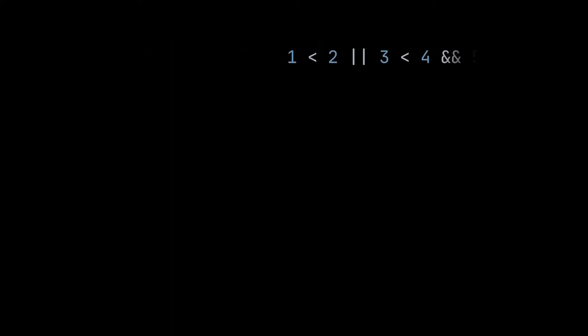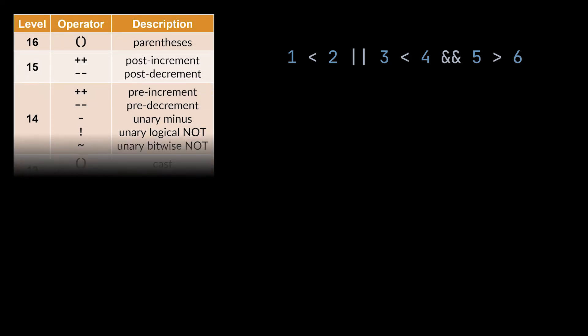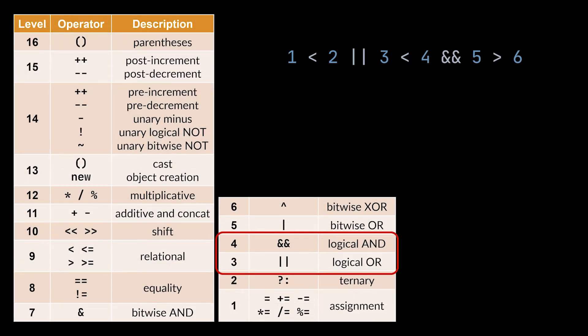But what if we had something like this? Not just mathematical, but logical. In this case, and following the table of precedence you see in front of you, the AND logical operator will be evaluated before the OR because it has a higher precedence. As you might have also noticed, expressions inside parentheses are always evaluated first, as they have the highest priority.